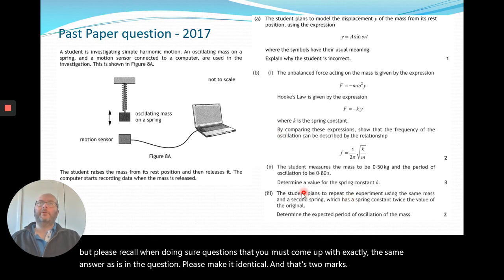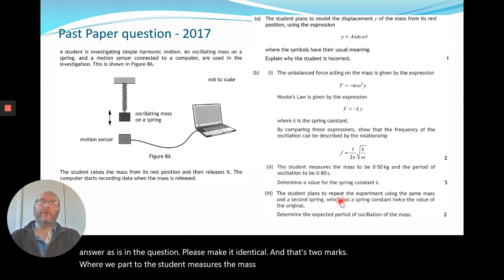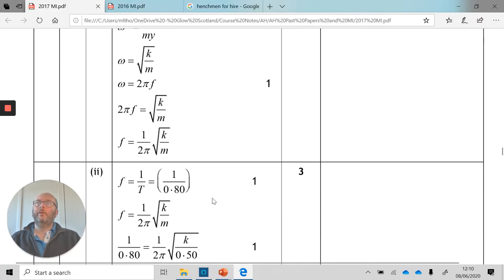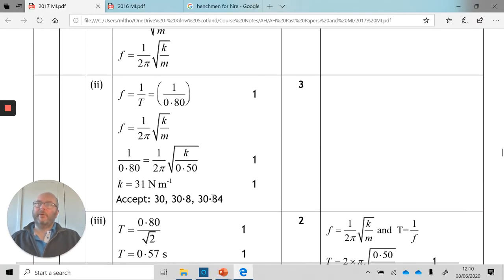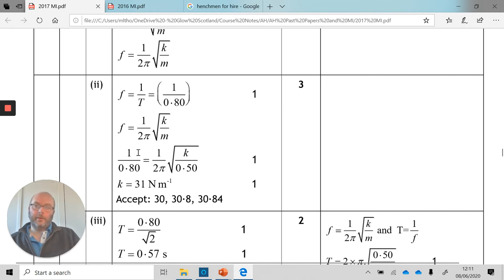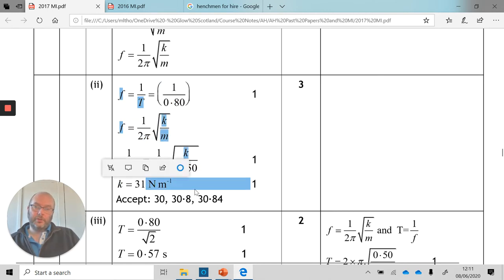Part (c): the student measures the mass to be 0.5 kilograms and the period of oscillation to be 0.8 seconds. Determine the value of the spring constant k. We've just derived this relationship, so plugging in all the numbers from the question, we get 31 newtons per metre.